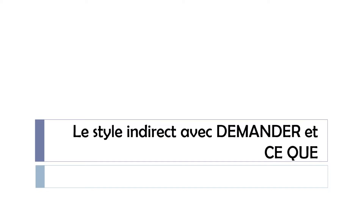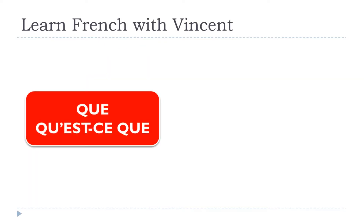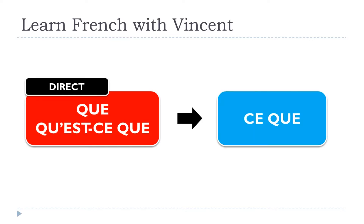Let's discover in this lesson 'le style indirect avec demander.' We'll cover the indirect style and see exactly how it works with the verb 'demander,' which means 'to ask.' We'll cover the situations when in the direct style you have 'que' or 'qu'est-ce que' — meaning 'what' — and when we transpose them using 'demander,' they will become 'ce que.'